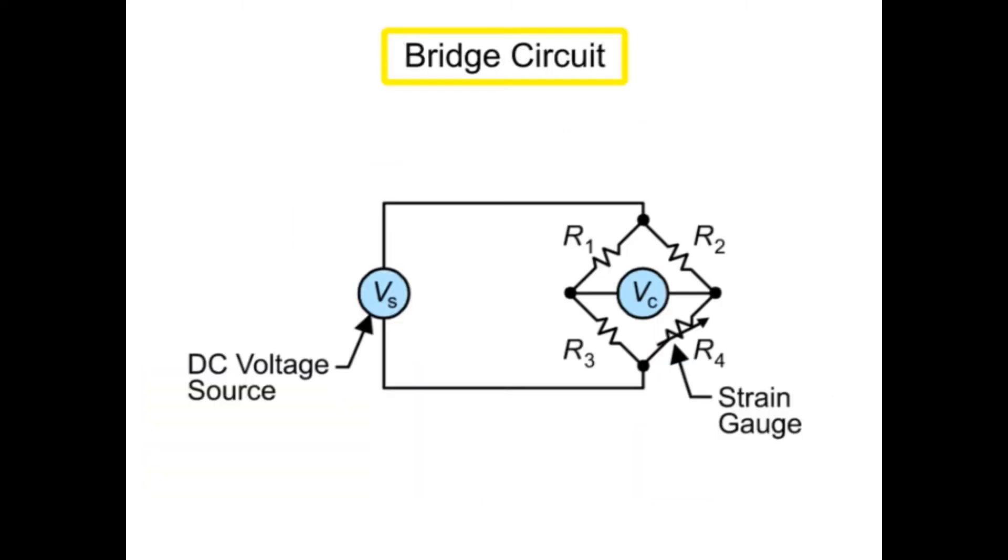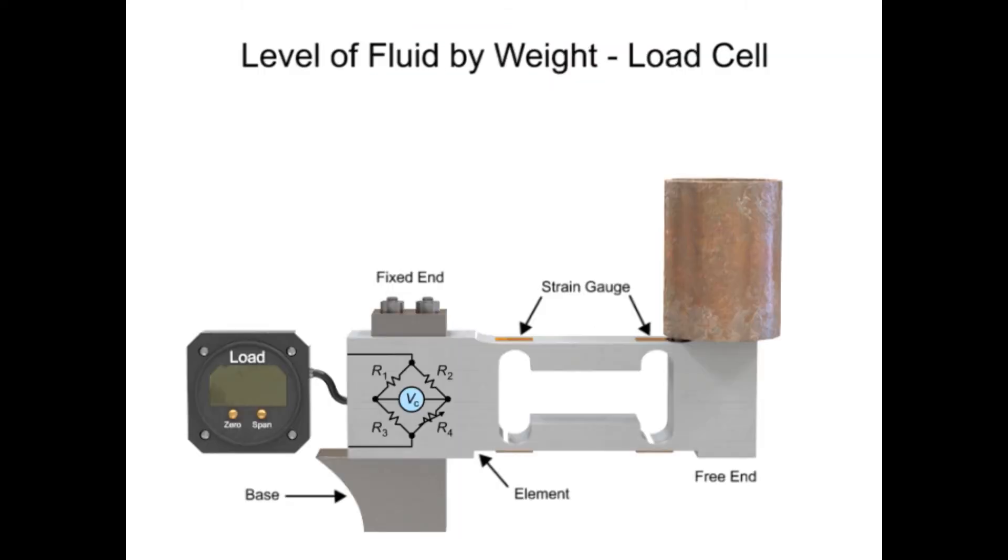Connected to a bridge circuit, the force measured is proportional to the output voltage. The output voltage is converted to a level measurement when vessel weight and vessel fluid density is known.